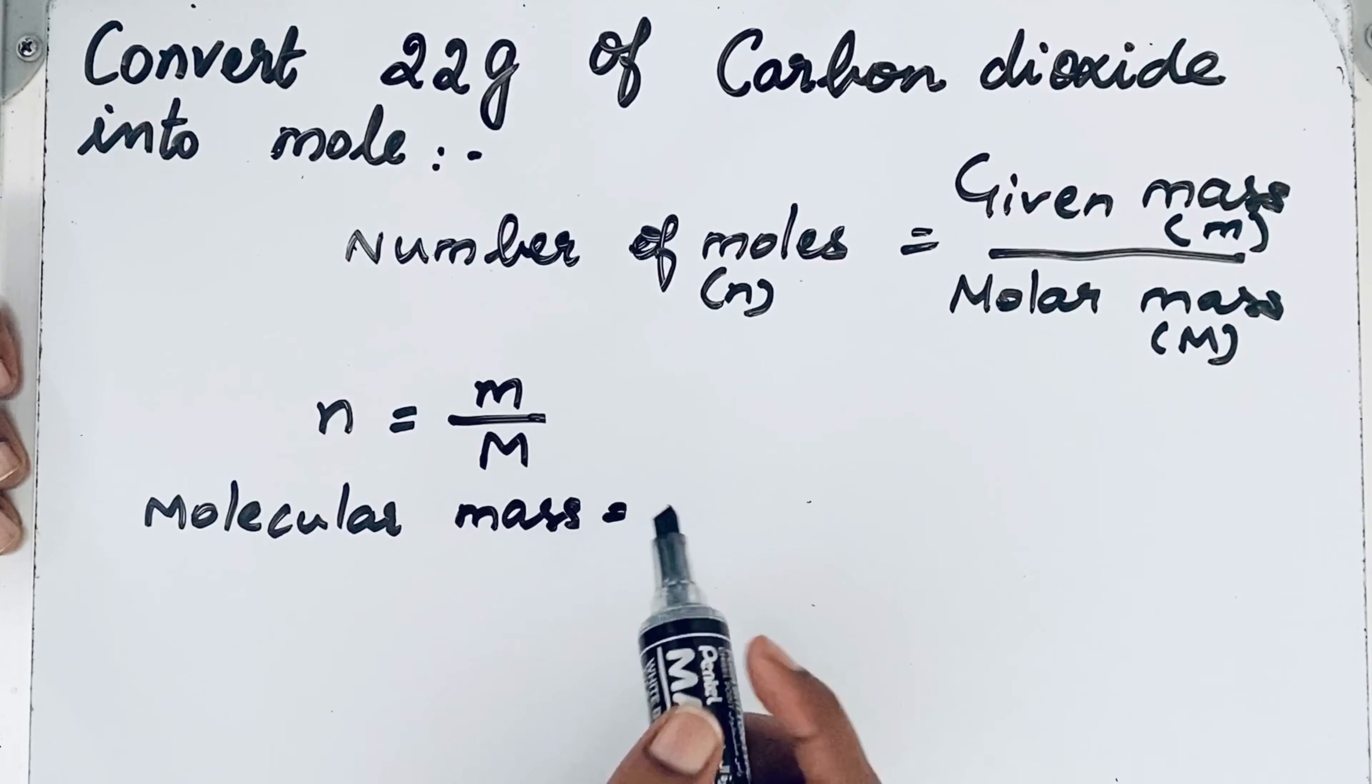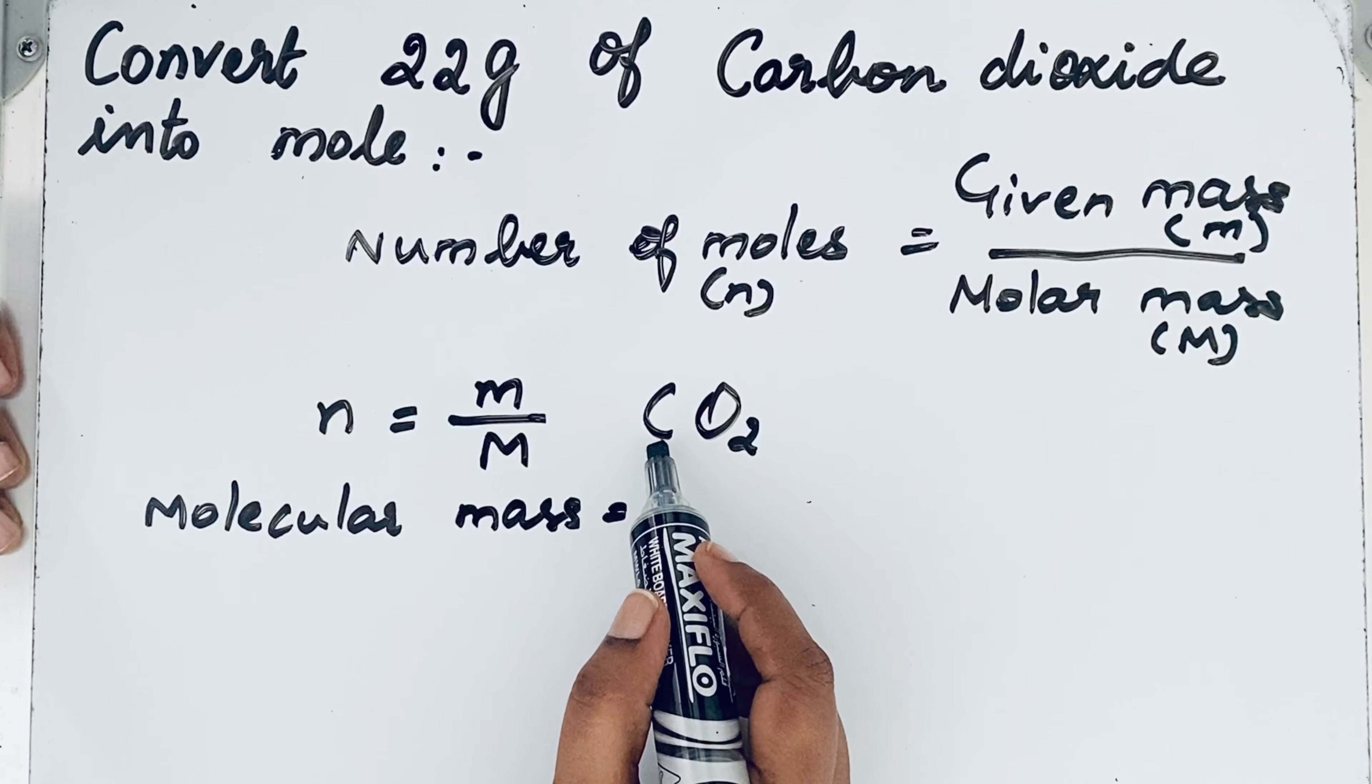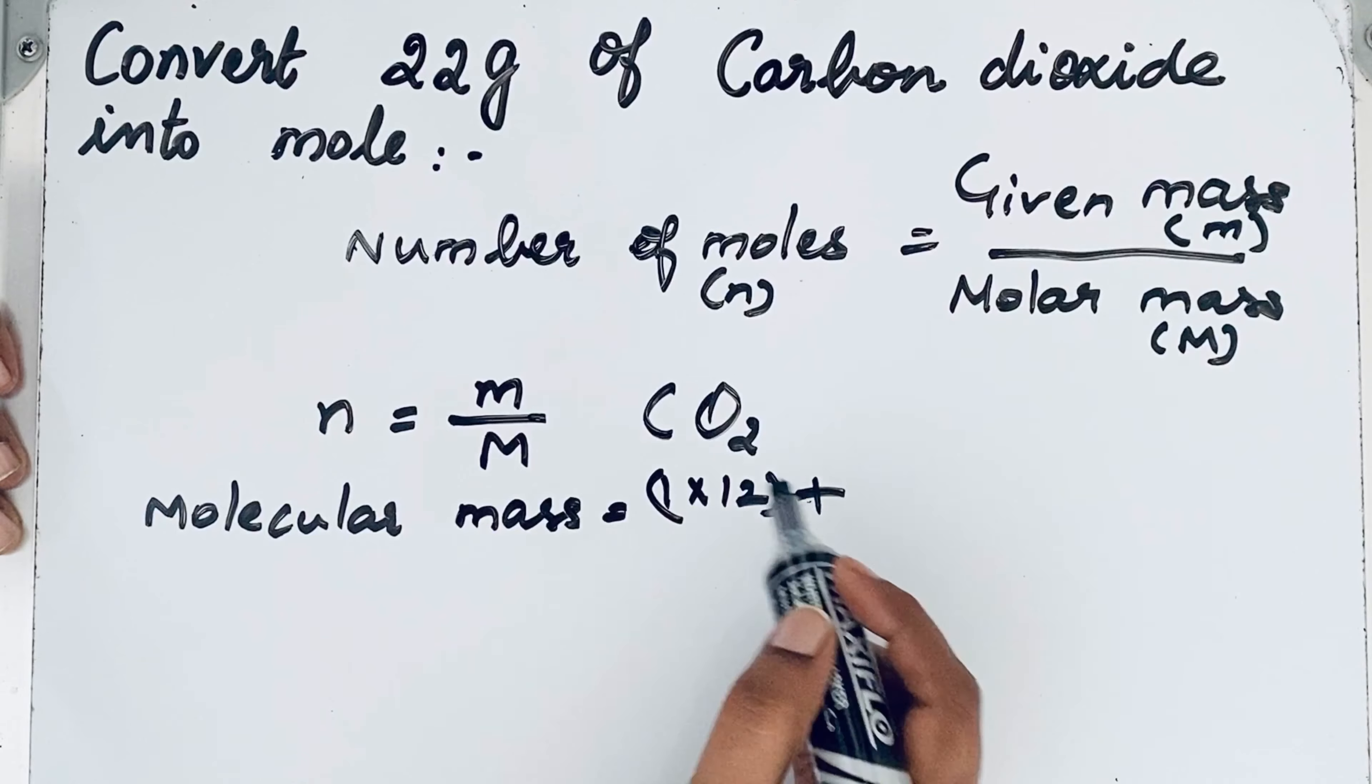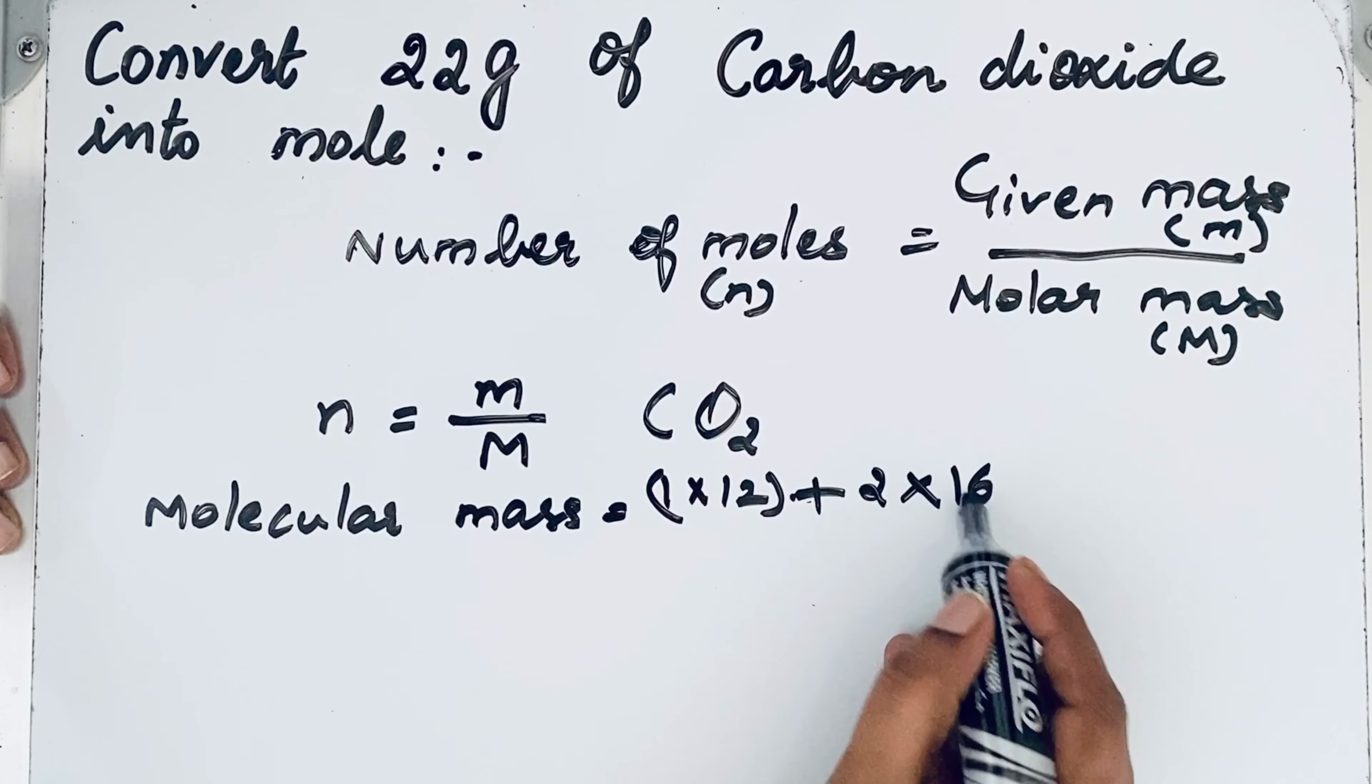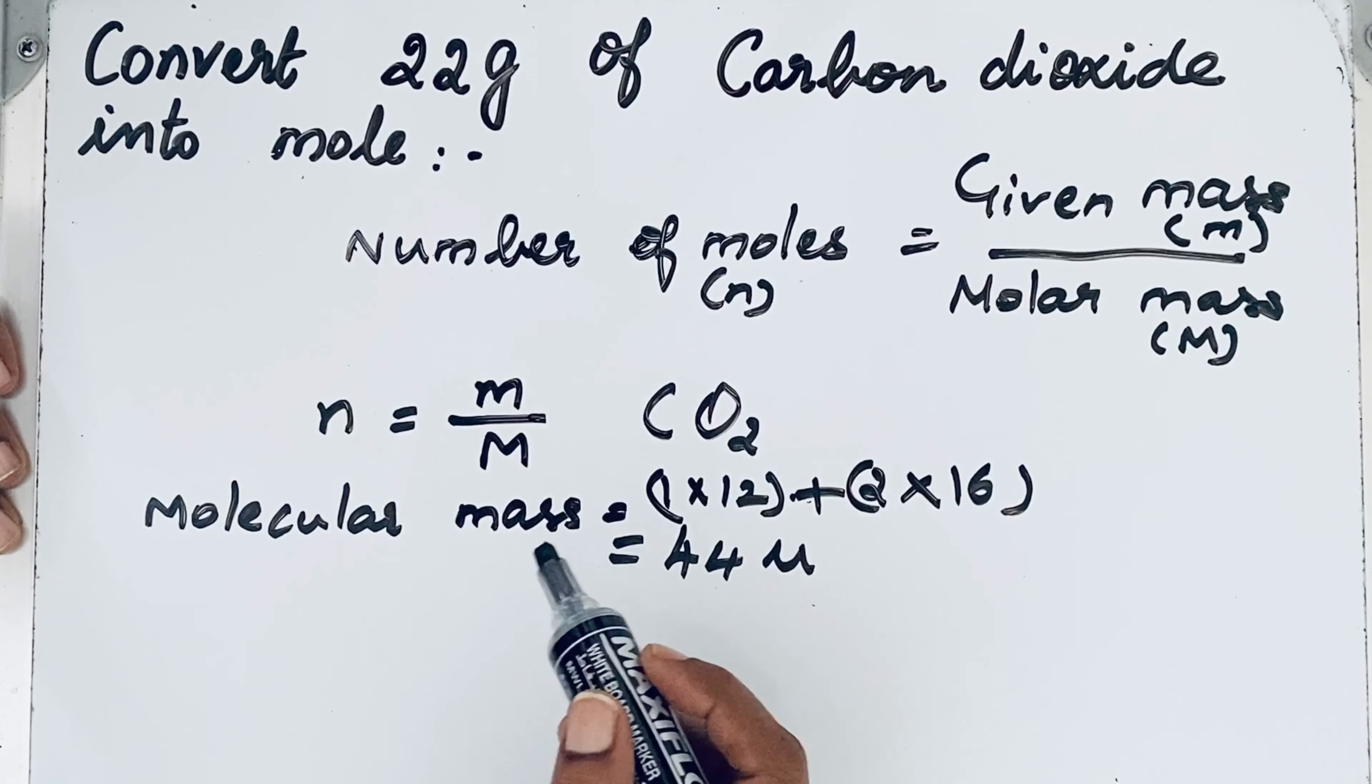What is the atomic mass of carbon? 12. So here in carbon dioxide, there is only one carbon atom, so 1 into 12 plus how many oxygen atoms are here? See, two oxygen atoms. Atomic number is 16, so 2 into 16. So what will you get? 44 u. This is molecular mass.